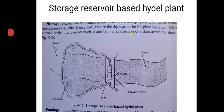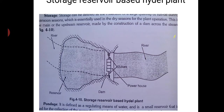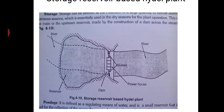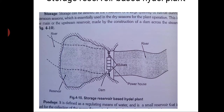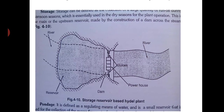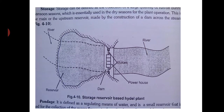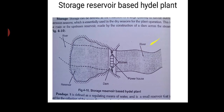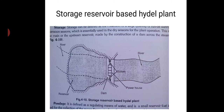Hello students, now we shall look at storage reservoir-based hydro power plants. When a dam is built, whatever water is stored behind it becomes a huge reservoir. Most of the dams in India have such storage created. These are built across rivers — you can see in this picture there is a river flowing, a dam is built, and because of the dam you have a huge reservoir. The exit of the dam has the powerhouse, and the exit to the river. This is known as a storage reservoir-based hydro power plant.